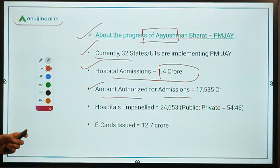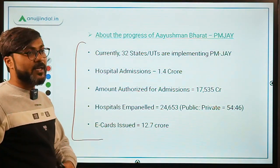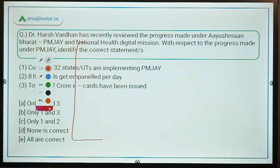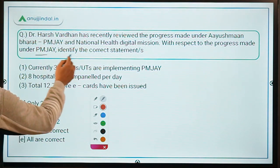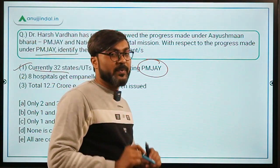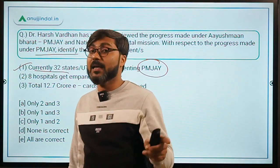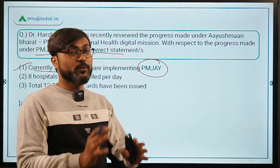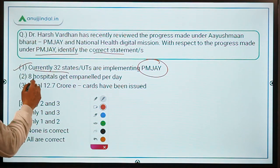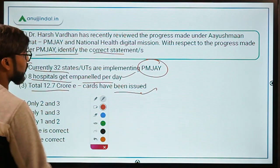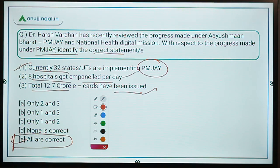The scheme is going very well. You have to remember all these facts because the government is promoting this scheme very aggressively. Regarding the question — Statement 1: 32 states/UTs are implementing PMJAY — correct. Statement 2: 8 hospitals are getting impaneled per day — correct. Statement 3: Total 12.7 crore e-cards have been issued — correct. Therefore, option E, all are correct, is the answer. Can you write in the comments which states or UTs are not implementing PMJAY?